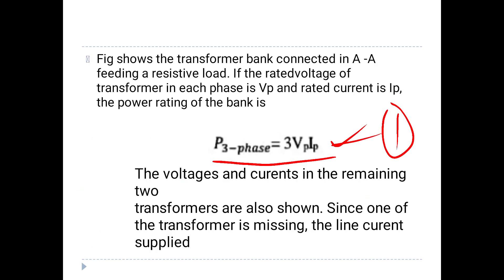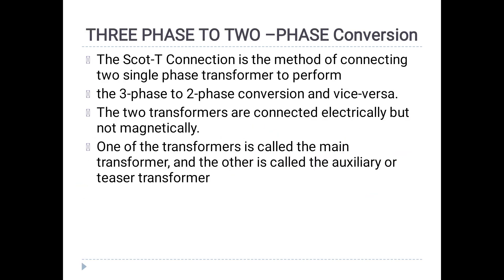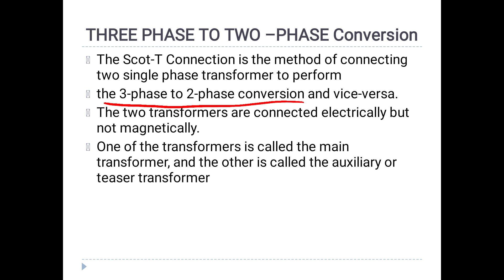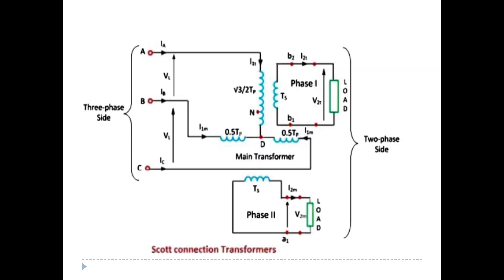Now, in this situation, we have a VV connection and a 3-phase to 2-phase conversion. This is the method of connecting two single-phase transformers to perform the 3-phase to 2-phase conversion, or vice versa — the Scott-T connection. We use two single-phase identical transformers: the first is the main transformer, and the second is the auxiliary or teaser transformer.